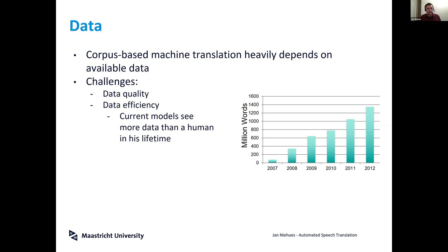These models can be trained on huge amounts of data, but they are often still not as good as humans. In contrast, some numbers suggest humans see roughly five million words in their lifetime. So these systems have now seen more words than any human has ever read, but they are often still not as good.